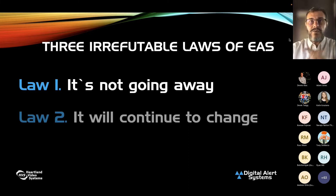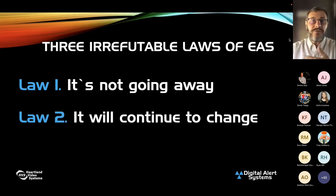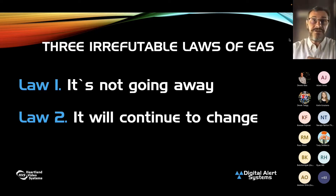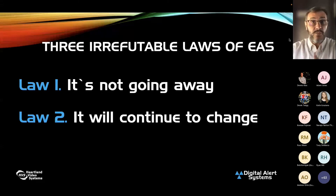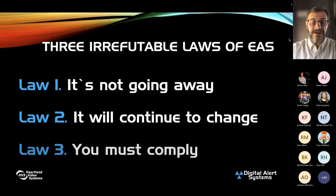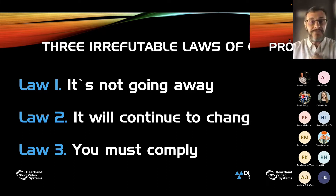The three irrefutable laws of EAS. Number one: it's not going away. Just live with it. Recognize it's not going away. It will continue to change. We've seen the evolution — right now we're already into the seventh iteration or seventh change of the rules on EAS. It's going to continue to change. Law number three: you must comply. That's it. There's no doubt about it. Someone once tried to add law number four: resistance is futile.